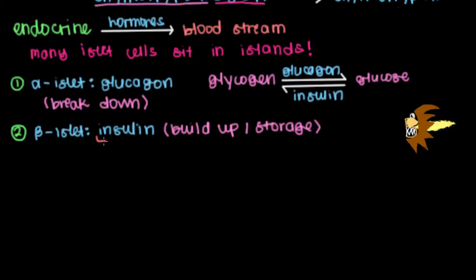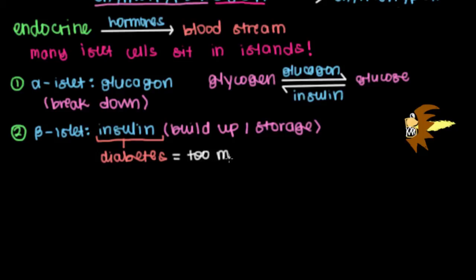What may be the most important thing to mention about insulin is that it is the hormone responsible for the disease known as diabetes. Diabetes occurs and causes damage to our bodies because we have too much glucose floating around — too much sugar — and that happens because insulin is not working properly. We're not building up and storing glucose in glycogen like we're supposed to be; instead, it's running all over the body.